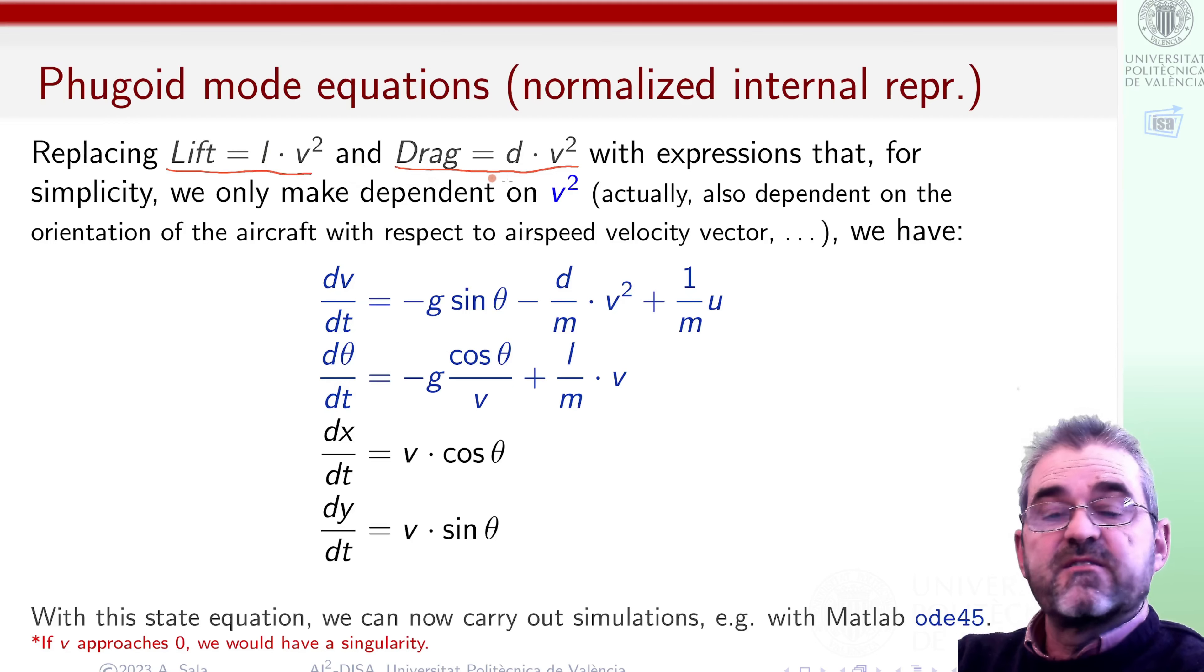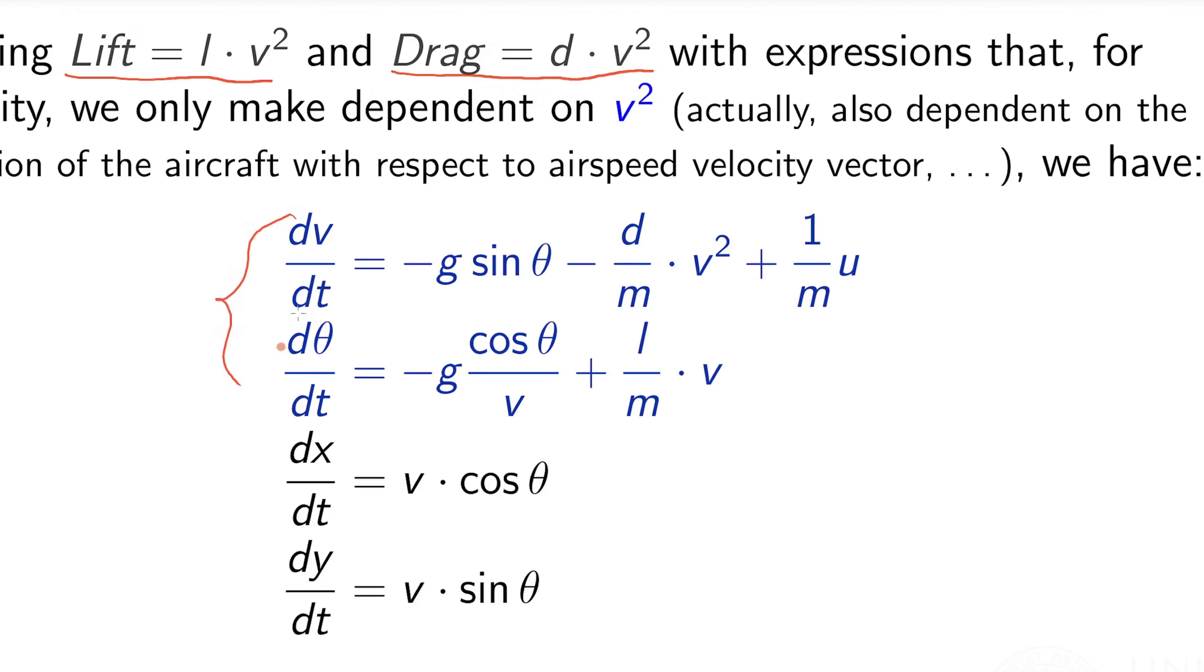So replacing lift and drag forces by this stuff, we were able to get these blue second order simplified equations of the fugoid motion of an aircraft. And once we have v and theta we can integrate them to simulate position as the bottom black equations.